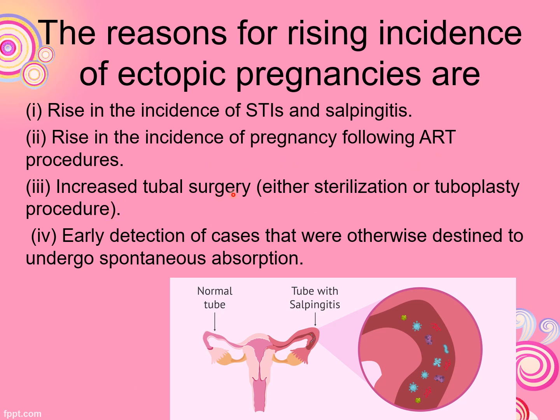Increased tubal surgery is another reason. For tubal surgery — such as sterilization reversal — the need to reconstruct and repair the tube increases the ectopic pregnancy rate.